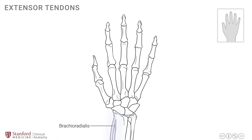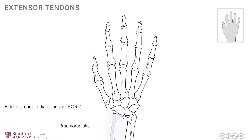The next muscle, immediately adjacent to it and on the ulnar side, is called the extensor carpi radialis longus, or ECRL for short. It runs down the radius, crossing the carpus or wrist bones, and attaches onto the base of the second metacarpal. The name is very descriptive: it's an extensor muscle that crosses the dorsum of the wrist — hence 'carpi'; it's on the radial side — hence 'radialis'; and it is the longer of the two muscles — hence 'longus.'